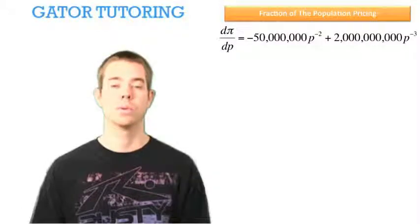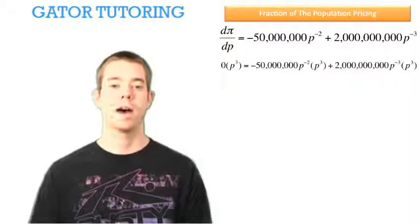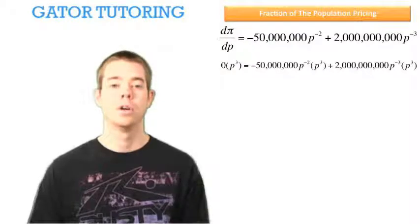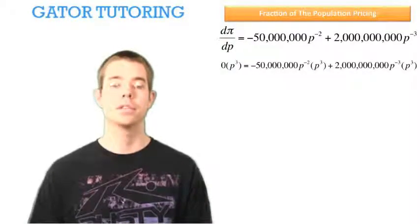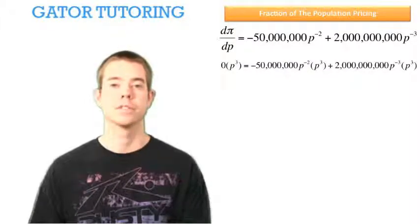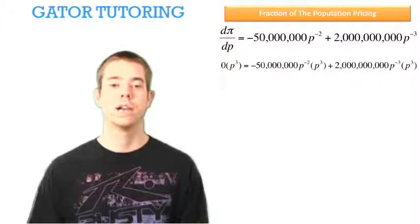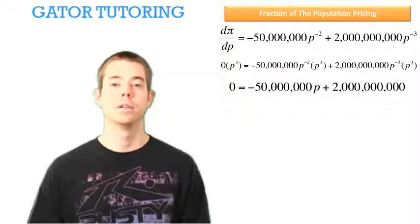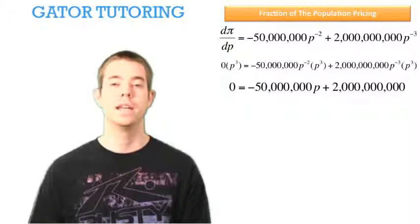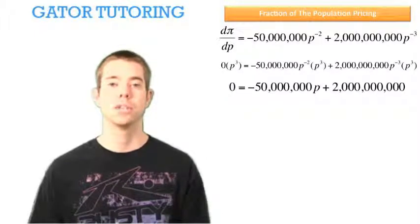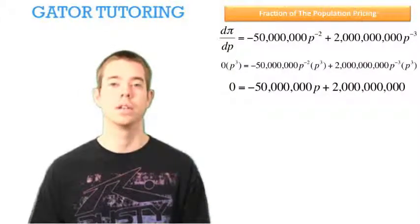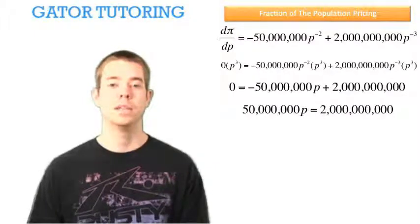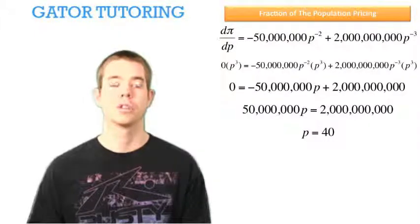We know that we're going to set this equal to 0. So we can do a little trick to help us mathematically solve this. As long as we do the same thing to both sides of the equation, we haven't changed anything. It's a legal math move. So we're going to multiply everything through by P raised to the positive 3. Now on the left side, 0 times P to the positive 3, that doesn't change anything. That's still 0. But on the right side, the negative 50 million P to the negative 2 times P to the 3 is just going to give us negative 50 million times P. And the 2 billion P to the negative 3 times P to the 3 gives us 2 billion because any number raised to the 0 is simply 1. Now we're ready to solve this. We add 50 million P to each side and we divide through by 50 million and we find that the price that we should charge is $40.